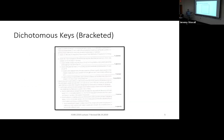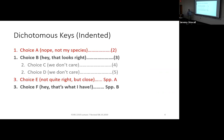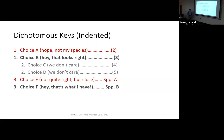That was an indented key. You can see the indented format: some choices are out, then they're in, then they're out again. If there were a step four, it would be indented in as well. The indentation is just to help you see which choices are paired. If they were all at the same level, you might confuse unrelated choices as being a pair.